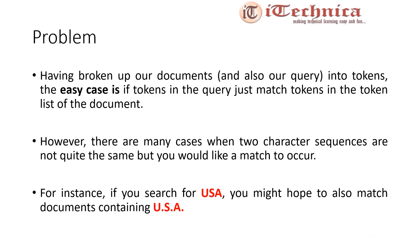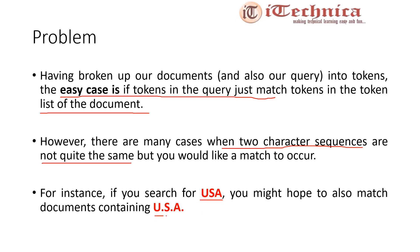Before going into the normalization part, first we have to understand the problem. As we know about tokenization, the easy case is when tokens in the query just match the tokens in the token list of the document — tokens in the query directly match with tokens available in the list of documents. But there are many cases when these two character sequences are not quite the same but we would still like a match to occur. For instance, if somebody searches for USA and U.S.A., we might hope to also match documents containing both terms, and the answer should be the same.